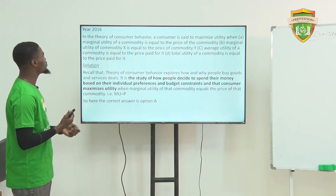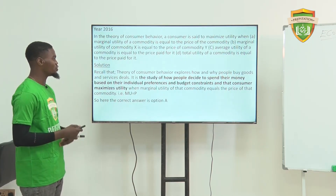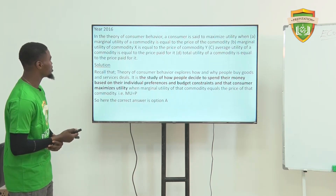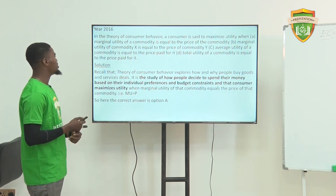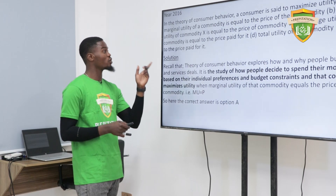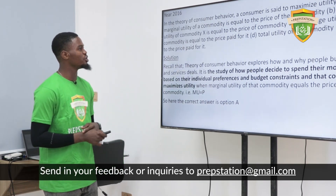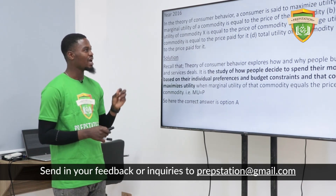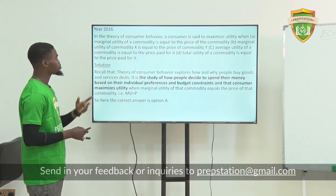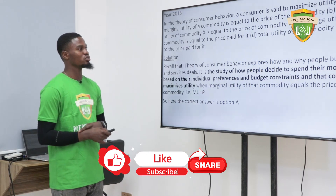In year 2016, in the theory of consumer behavior — which deals with how a consumer behaves or reacts to change in price given their level of income — the consumer is set to maximize utility when: A) marginal utility of a commodity is equal to the price of that commodity, B) marginal utility of commodity X equals the price of commodity Y, C) average utility of a commodity is equal to the price paid for it, or D) total utility equals the price paid. We know that utility maximization is attained where the marginal utility of that commodity equals the price of that commodity. So the appropriate answer is option A.